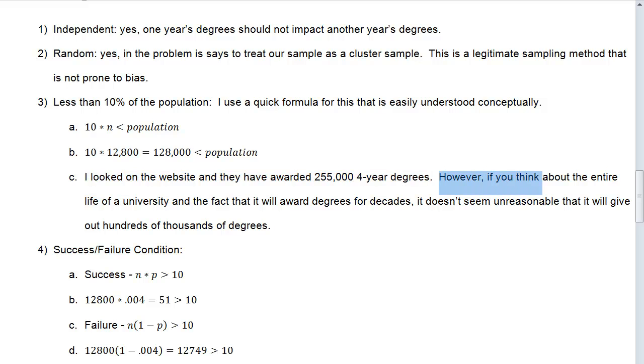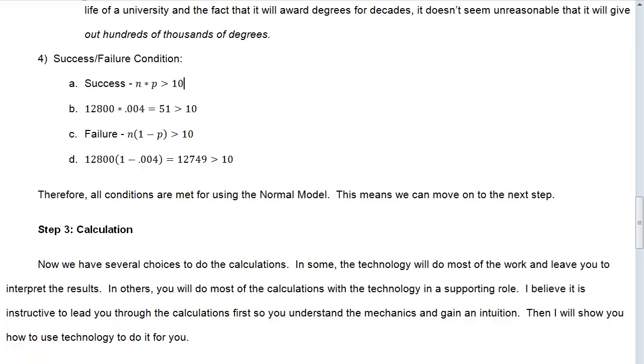However, if you think about the entire life of a university and the fact that it will award degrees for decades and in some cases for 100 years, it doesn't seem unreasonable that it will give out hundreds of thousands of degrees. Some are going to be more obvious than others. Some you're just maybe going to have to trust. If you're doing a homework problem, you could look it up.